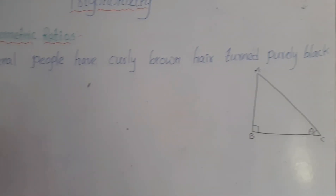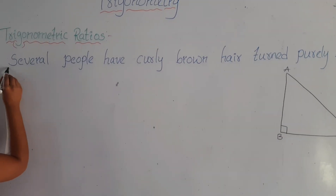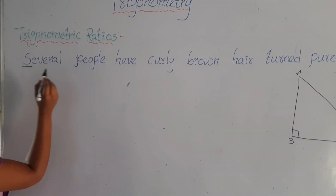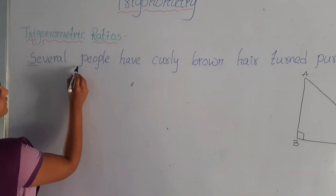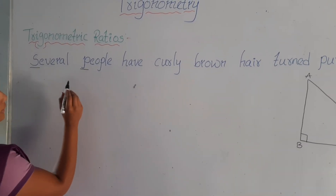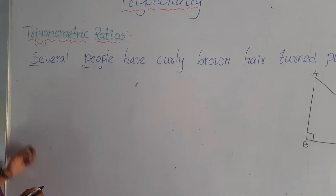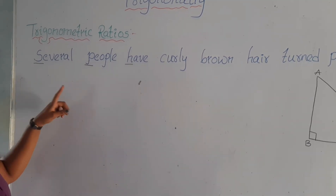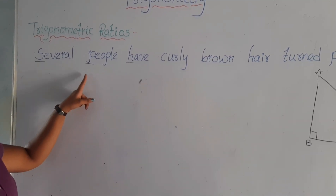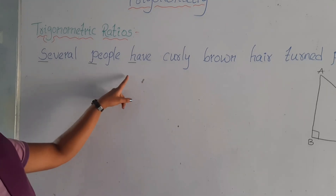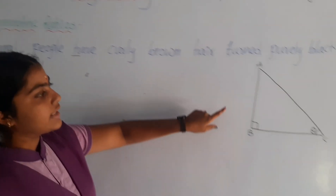Here S stands for sin theta, P stands for perpendicular, and H stands for hypotenuse. Sin theta is equal to perpendicular by hypotenuse.